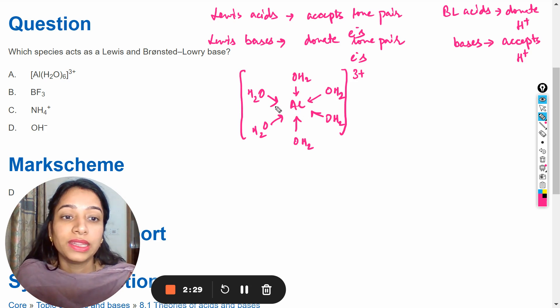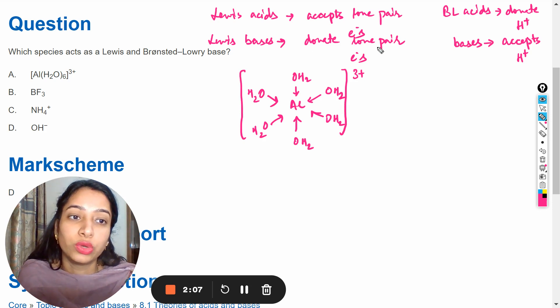So there is no electron pair or we can say lone pair, that's why it can't act as Lewis base because for acting as Lewis base it should donate the lone pair. But it has no lone pair. So this can't be the answer.